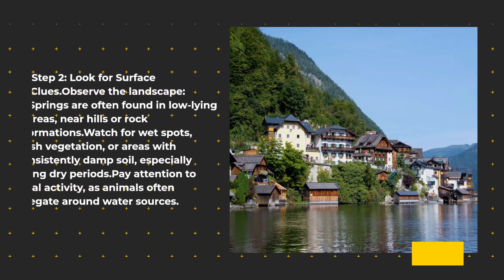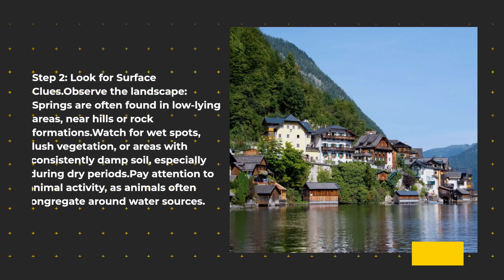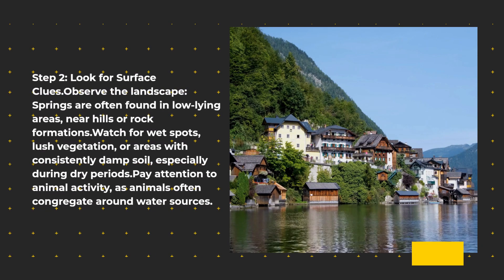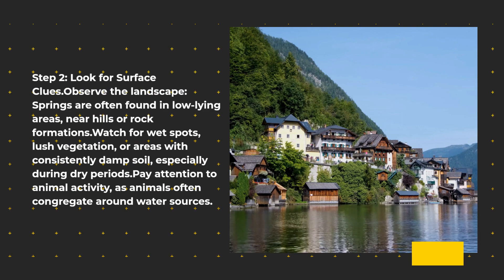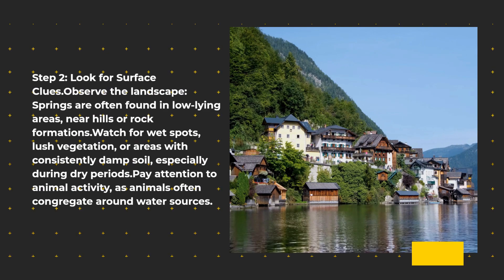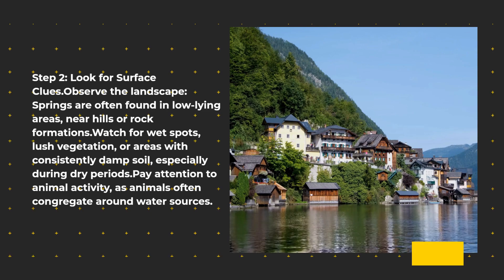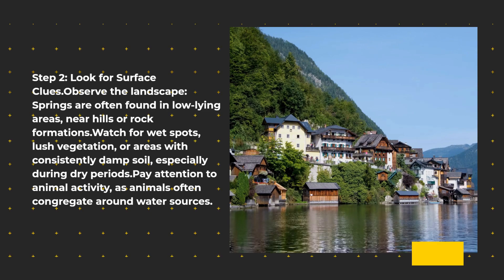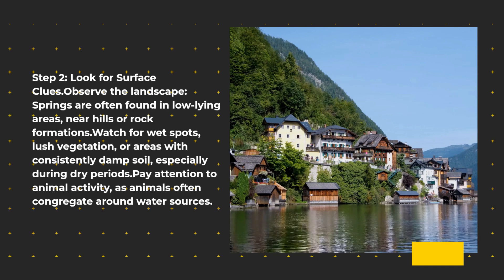Step 2: Look for surface clues. Observe the landscape — springs are often found in low-lying areas, near hills or rock formations. Watch for wet spots, lush vegetation, or areas with consistently damp soil, especially during dry periods. Pay attention to animal activity, as animals often congregate around water sources.